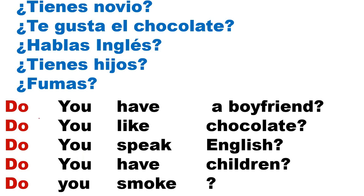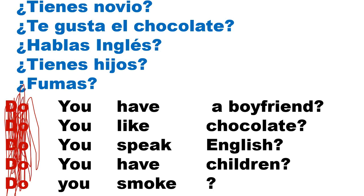Something important to understand: in everyday spoken English, native speakers sometimes — actually many times — omit the auxiliary. Using the auxiliary is the correct and formal way. But in everyday English, natives also form questions starting from the subject, using intonation alone. The intonation goes up. For example: 'You have a boyfriend?' 'You like chocolate?' 'You speak English?' You need to learn both ways of asking questions: with auxiliary and without auxiliary.